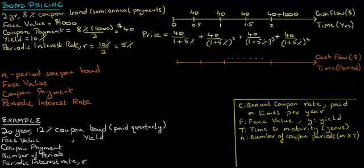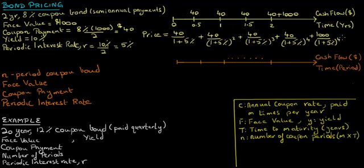In addition to calculating the present value of these coupon payments, we have to discount the face value of the bond that will be received at the end of two years, and we discount it at the periodic interest rate of 5% over four periods. This gives us the current price of this bond of $964.50.